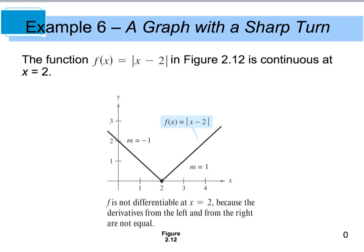Our last example says that the function f of x equals the absolute value of x minus 2 is continuous at x equals 2. When we look at this function, I will agree with you 100% that we have a continuous function. There's no discontinuities. However, we cannot take the derivative of this graph.